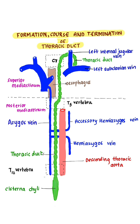In summary: the thoracic duct begins as an upward continuation of the cisterna chyli, enters the thorax through the aortic opening of the diaphragm, ascends through the posterior mediastinum and then the superior mediastinum to reach the root of the neck. In the neck, it arches laterally at the level of C7 and finally descends in front of the first part of the left subclavian artery, opening at the junction of the left subclavian vein and the left internal jugular vein.